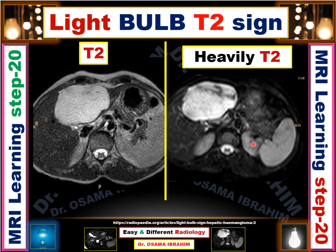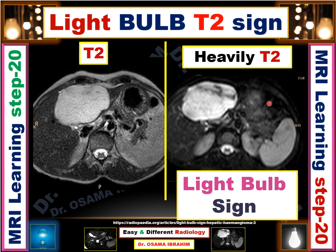If you compare the two images for the same patient, you can find the blackout of the background — the liver and other organs — compared with the original T2. The lesions appearing here look like a light bulb, which is why it is called the light bulb sign, referring to the hyperintense signal of lesions on the heavily T2.